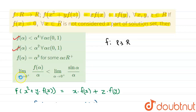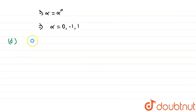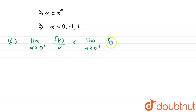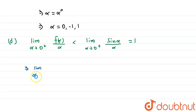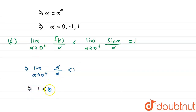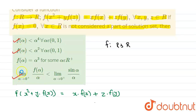We will check option D. Option D states that the limit as α → 0⁺ of f(α)/α is less than the limit as α → 0⁺ of sin(α)/α. We know sin(α)/α → 1 as a standard result. Since f(α) satisfies the linear relation, f(α) = α, so the limit of α/α = 1. This gives 1 < 1, which is false. So option D is also wrong. Therefore, options A, B, and D are the answers.